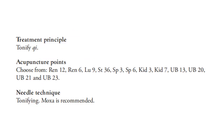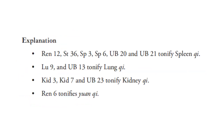Treatment principle: tonify qi. Acupuncture points: choose from REN12, REN6, Lung 9, Stomach 36, Spleen 3, Spleen 6, Kidney 3, Kidney 7, UB13, UB20, UB21, and UB23. Needle technique is to tonify. Moxa is recommended. REN12, Stomach 36, Spleen 3, Spleen 6, UB20, and UB21 tonify spleen qi. Lung 9 and UB13 tonify lung qi. Kidney 3, Kidney 7, and UB23 tonify kidney qi. REN6 tonifies original qi.